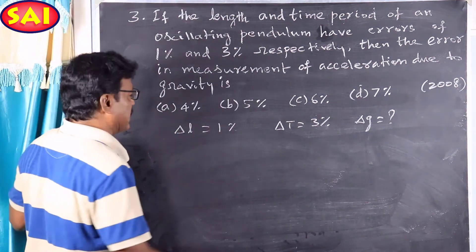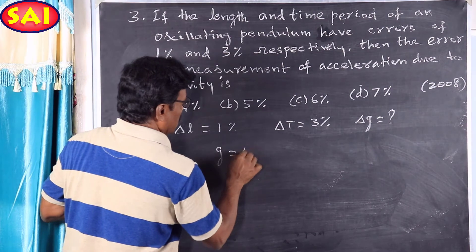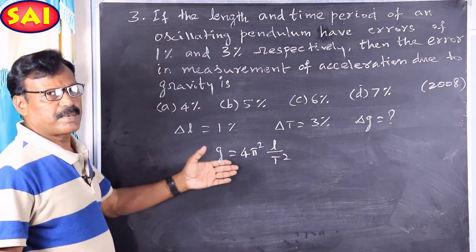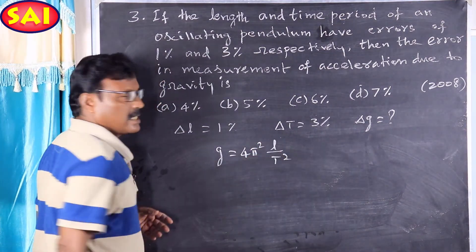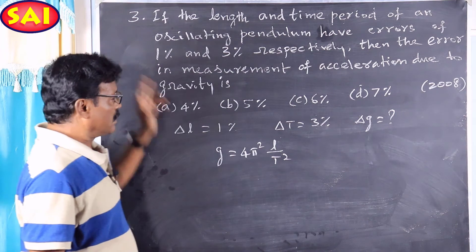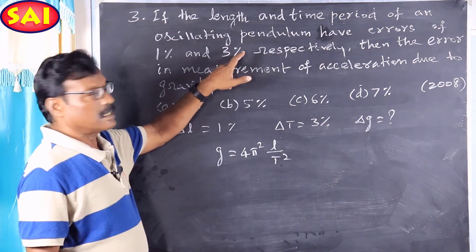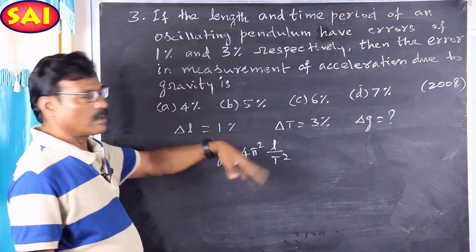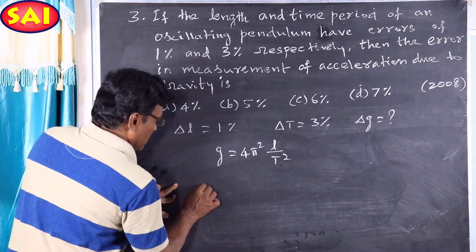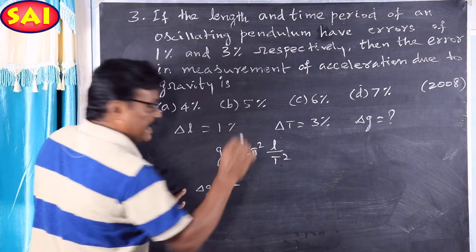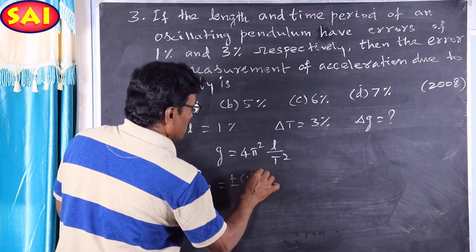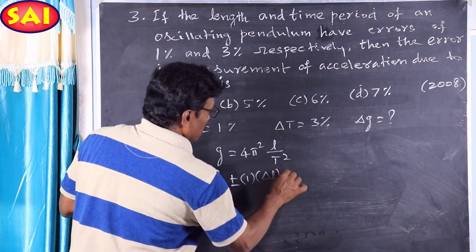G is equal to 4 pi squared into L by T squared. So delta G is equal to plus or minus — that is important — L to the power 1 into delta L, plus or minus...